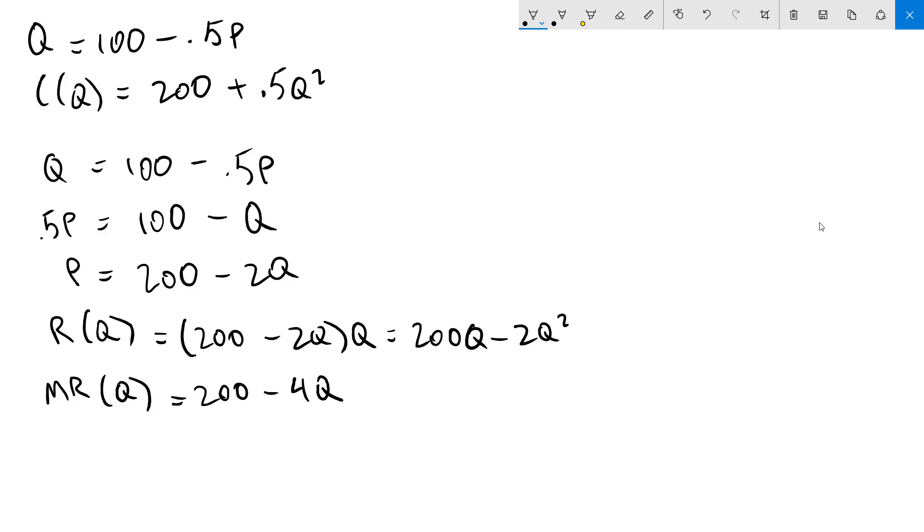This reveals a useful shortcut which is when we have a linear inverse demand function the marginal revenue function is always the same as the inverse demand but with double the slope. So we've gone from a slope of negative 2 to negative 4.